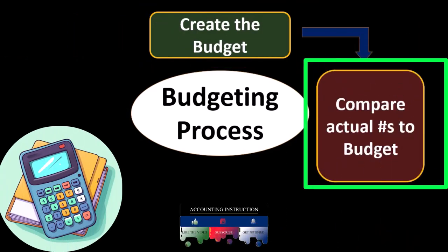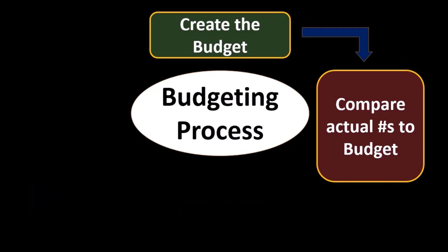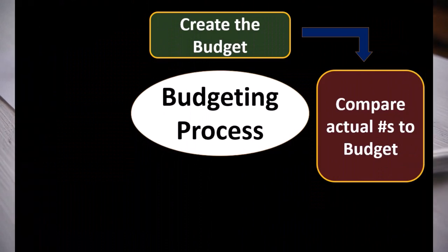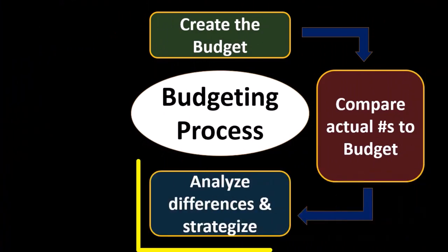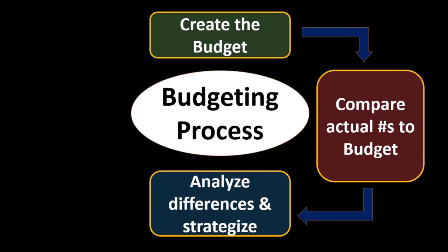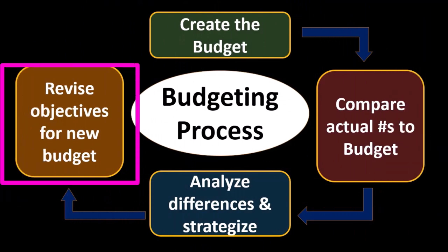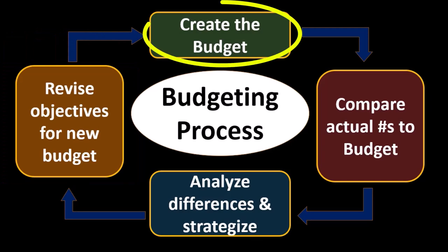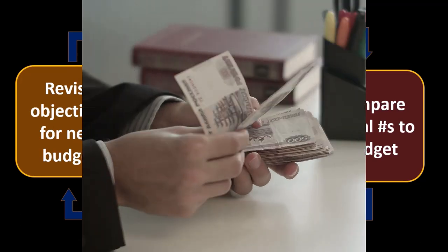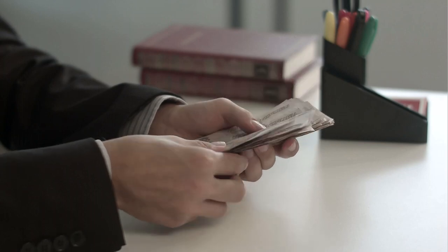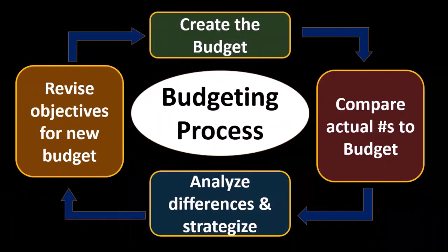The budgeting process will start off with the creation of the budget. We're going to compare the actual numbers to the budgeted numbers, so we create the budget, then the actual time period runs — the month, the year — then we do the comparison: what did we expect versus what actually happened? We analyze the differences, the variances, then we strategize and make changes based on those, and then implement a new budget, revising objectives and creating the new budget again. This is the standard cycle: we plan, budget, project, the time period passes, we compare, look at differences, and make changes.